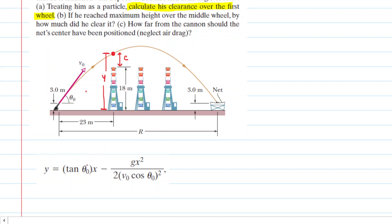The only challenge is that this equation assumes launch takes place at ground level. But the acrobat is launched from an initial height of 3 meters, so Y naught equals 3 meters. We can use the trajectory equation as long as we add that extra initial height onto the equation.